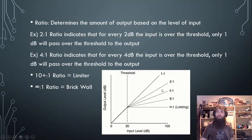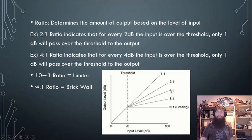At 2:1, the output is lower than at 1:1. And then even more at 4:1, and even more at 8:1.